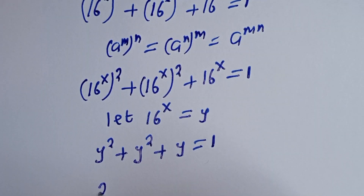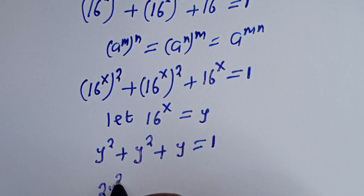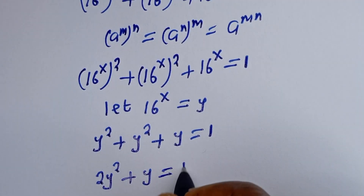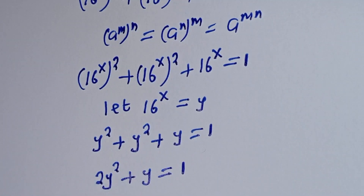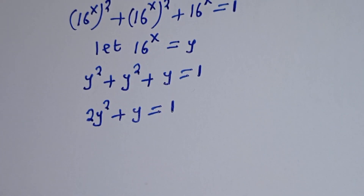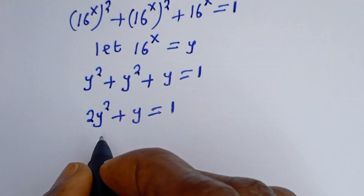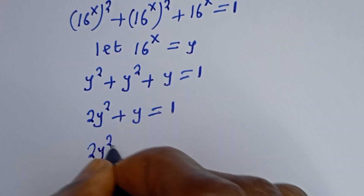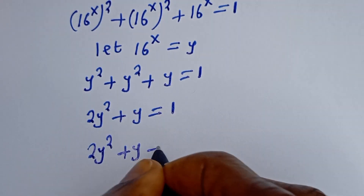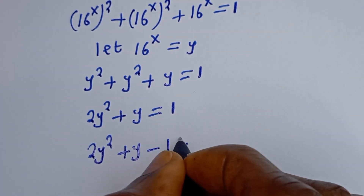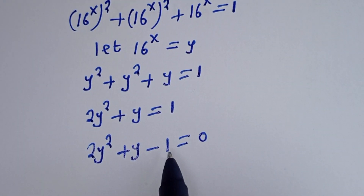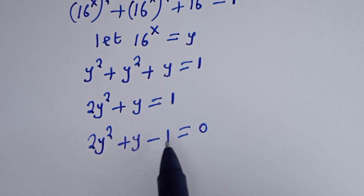Let y equal 16 to the power of s. Then this becomes y squared plus y squared plus y is equal to 1, which gives us 2y squared plus y is equal to 1. Therefore 2y squared plus y minus 1 is equal to 0. This is a quadratic equation which can be solved using the quadratic formula.